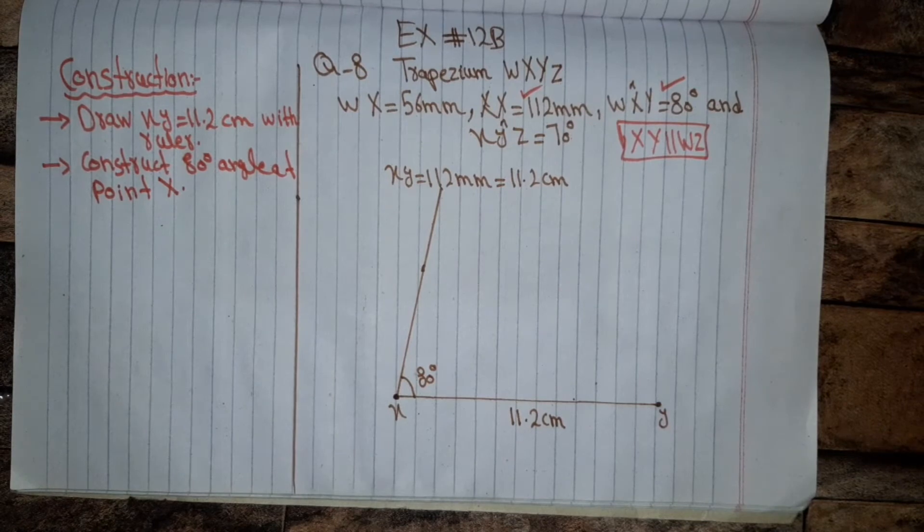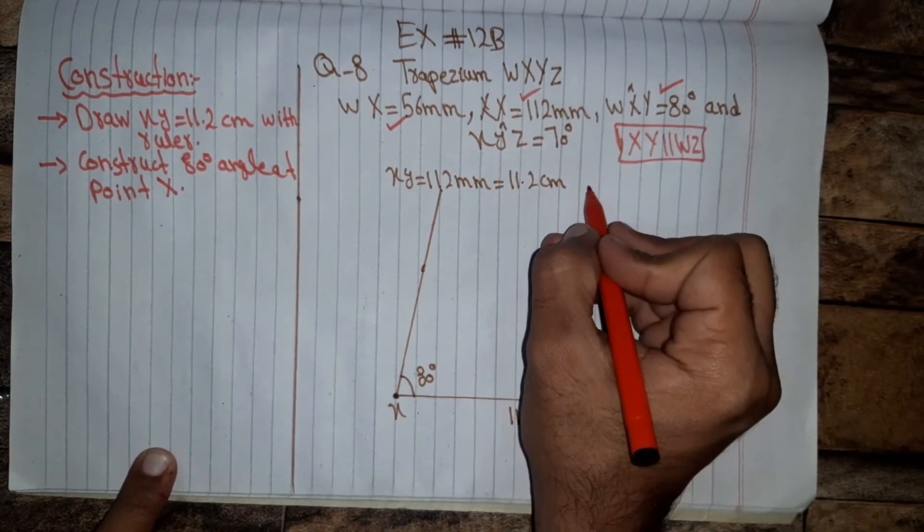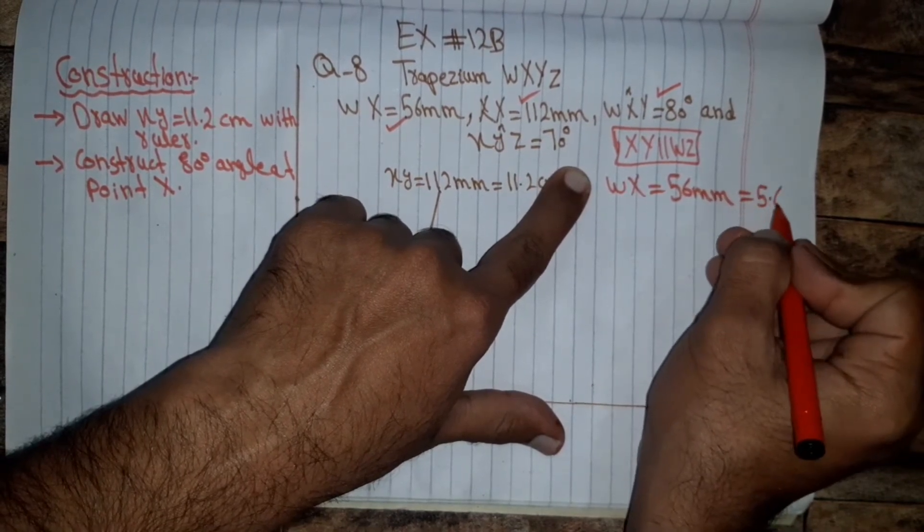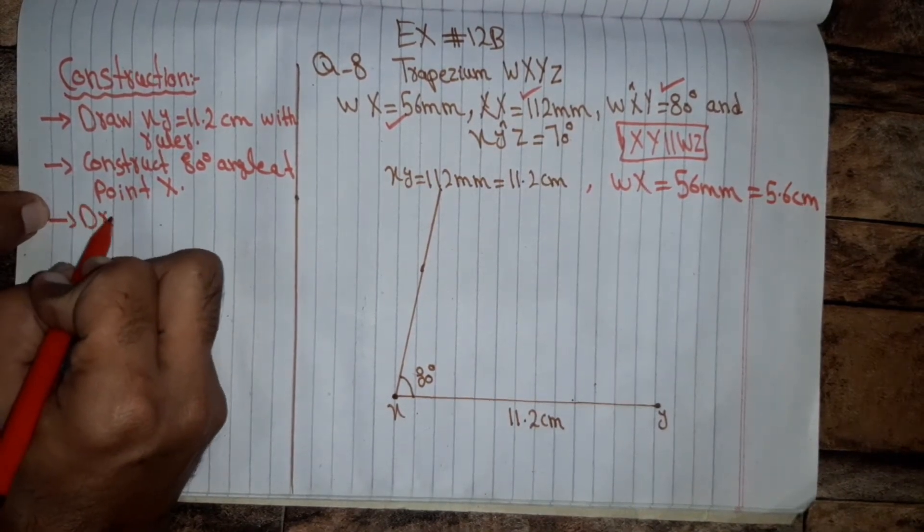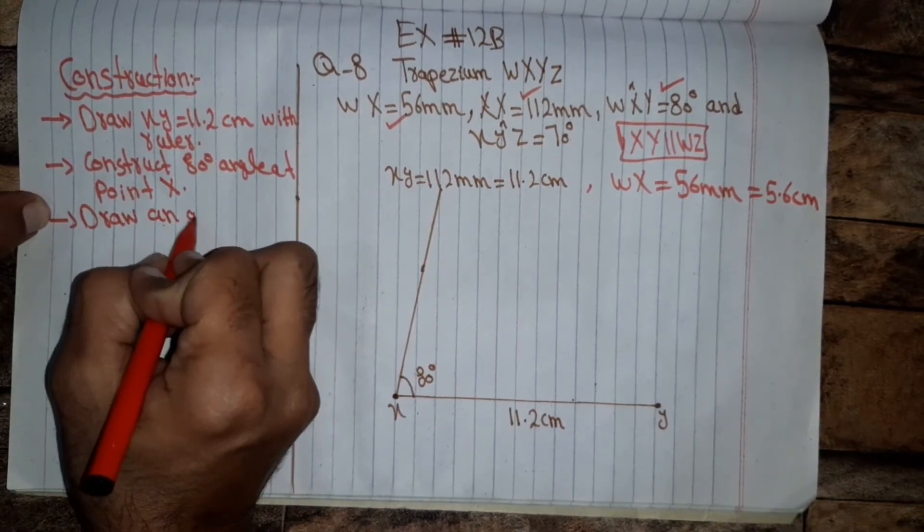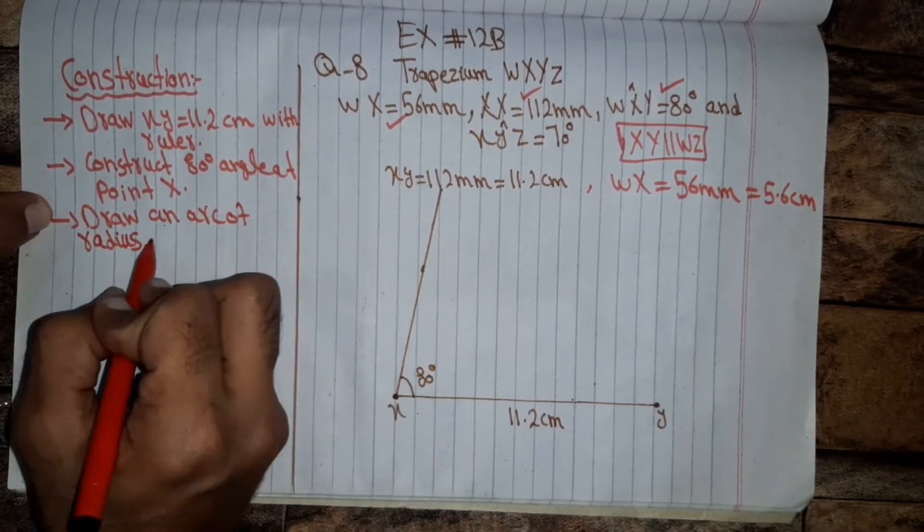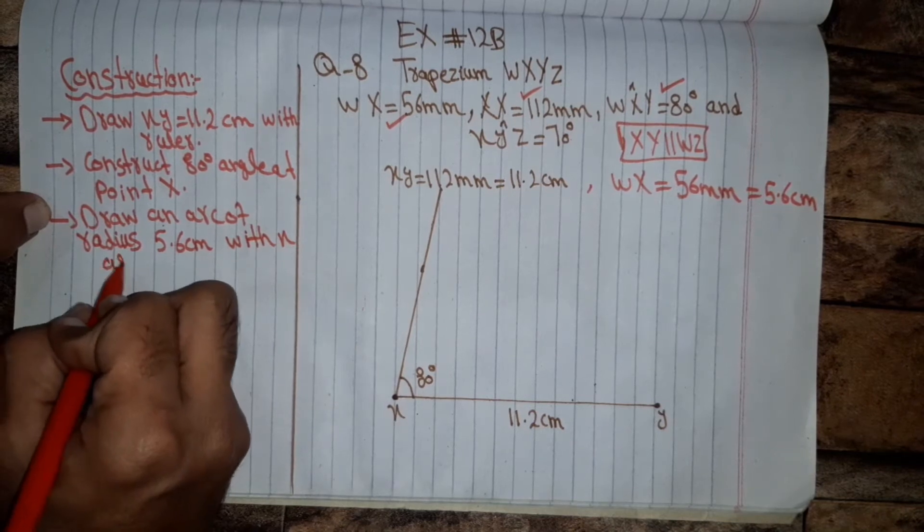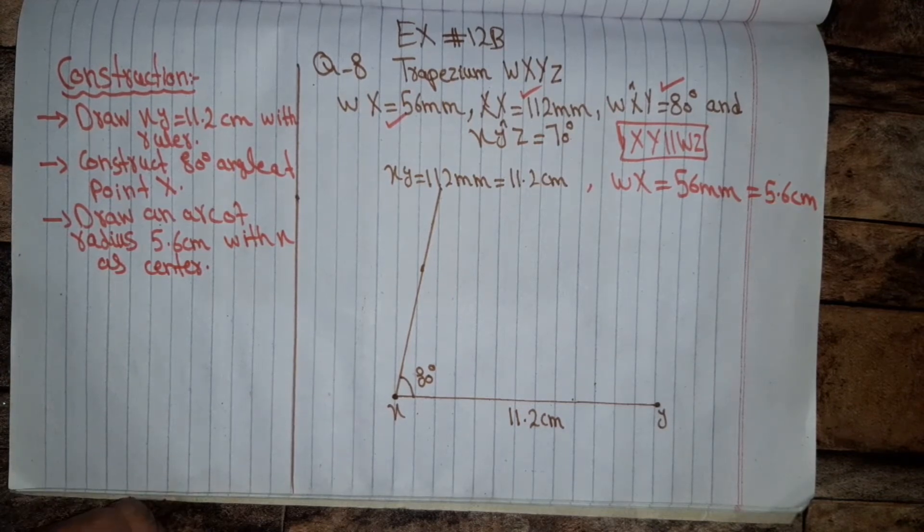Now we will draw this length WX equal 56 millimeters and equal 5.6 centimeters. So we will draw an arc of radius 5.6 centimeters with X as center. So we will draw an arc of radius 5.6 centimeters.